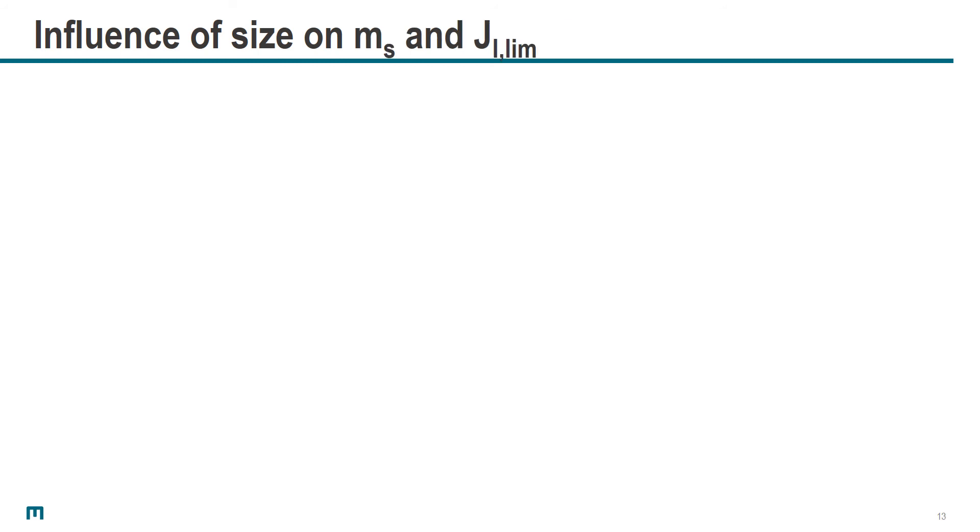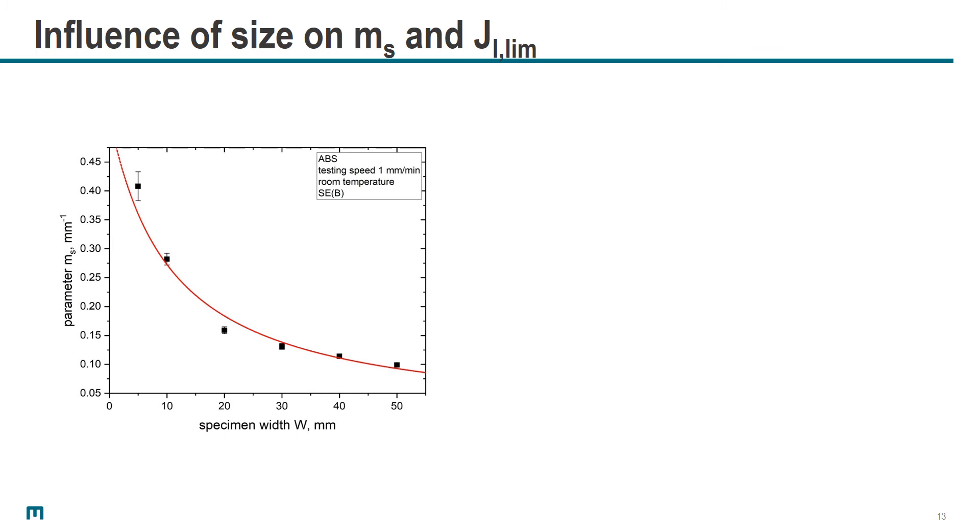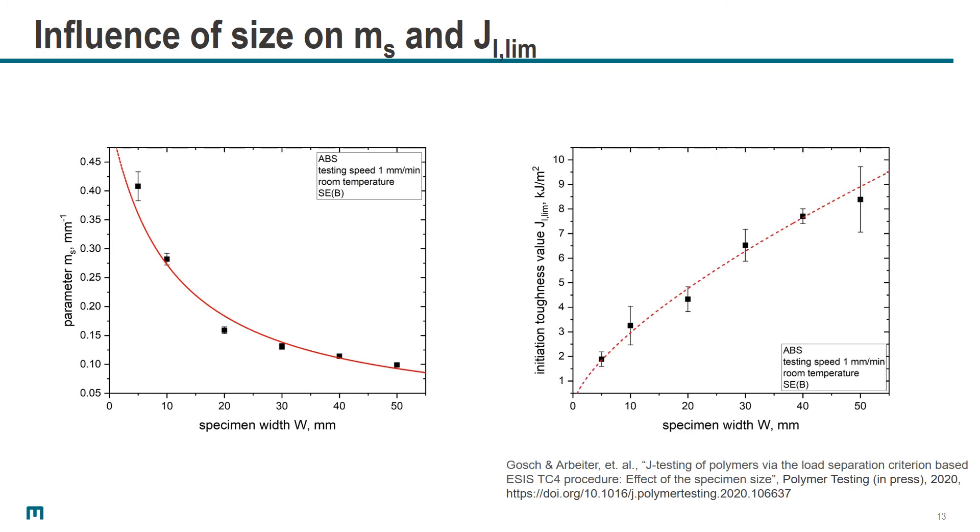If we have a look at the exact values of the slope MS and the pseudo-initiation fracture J_1 Lim, we can see here on the left side for MS and on the right side for J_1 Lim, that we are clearly dependent on the actual specimen size W between 5 and 50 mm. This gave us quite a task to think about where this dependency is coming from.